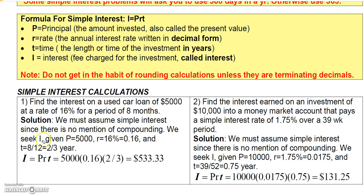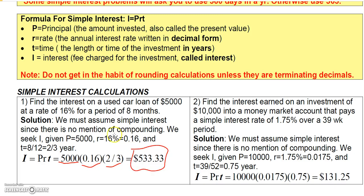Example 1: Find the interest on a used car loan of $5,000 at a rate of 16% for a period of 8 months. The principal is $5,000; the rate in decimal is 0.16; and time for 8 months is 8/12 years, which reduces to 2/3. Multiplying these together: 5,000 × 0.16 × 2/3 gives us $533.33.